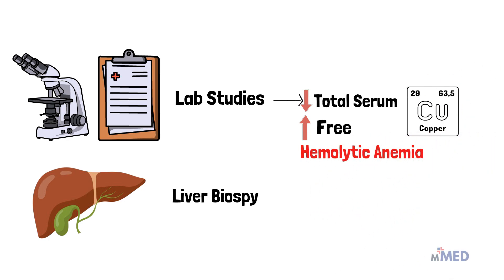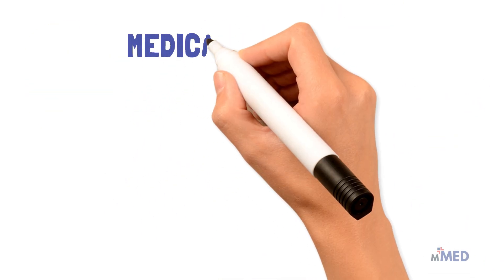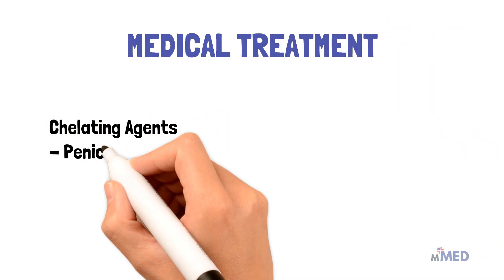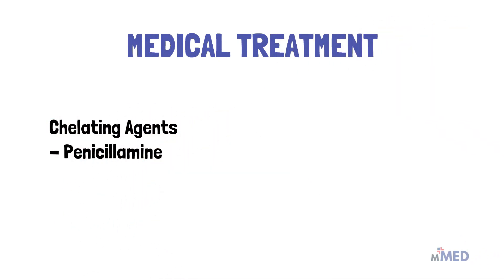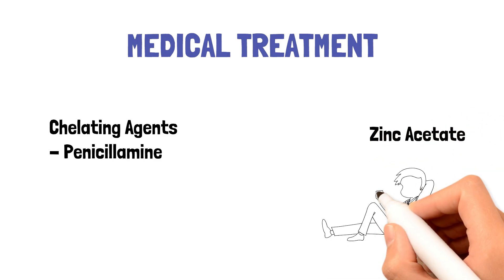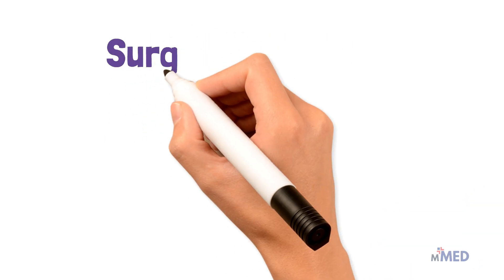A liver biopsy will show increased hepatic copper levels. Treatment of Wilson's disease can be medical and surgical. Medical treatment can include chelating agents such as penicillamine, and zinc acetate, which prevents your body from absorbing copper from the food you eat.